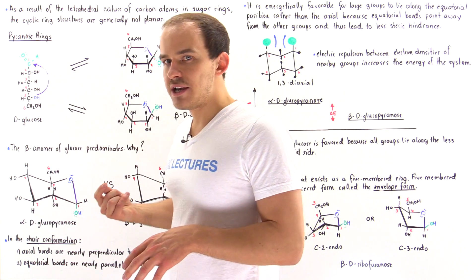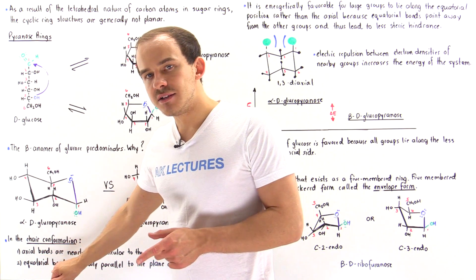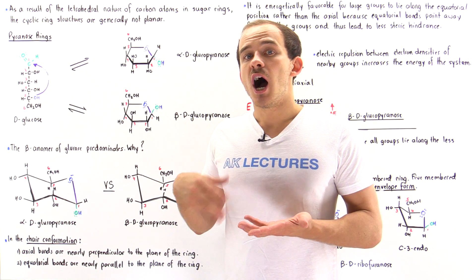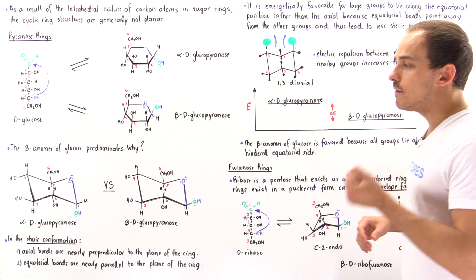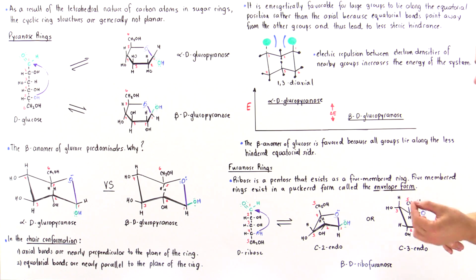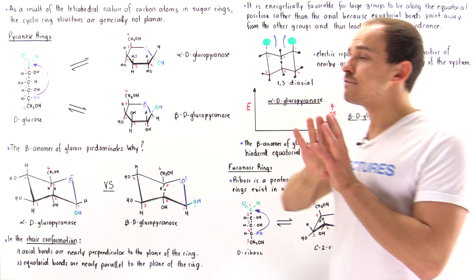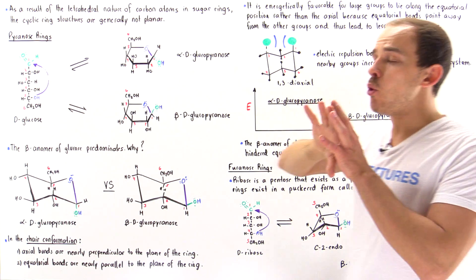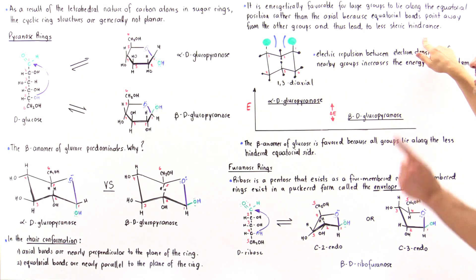In any chair conformation, we have two types of positions: the axial position and the equatorial position. The axial bonds are nearly perpendicular with respect to the plane of that molecule, while the equatorial bonds are nearly parallel and point away from the plane of that cyclic molecule. It is energetically favorable for large groups to be found on the equatorial position rather than the axial position, because the equatorial position points away from the general structure of the ring and away from the other groups, creating the least amount of steric hindrance.